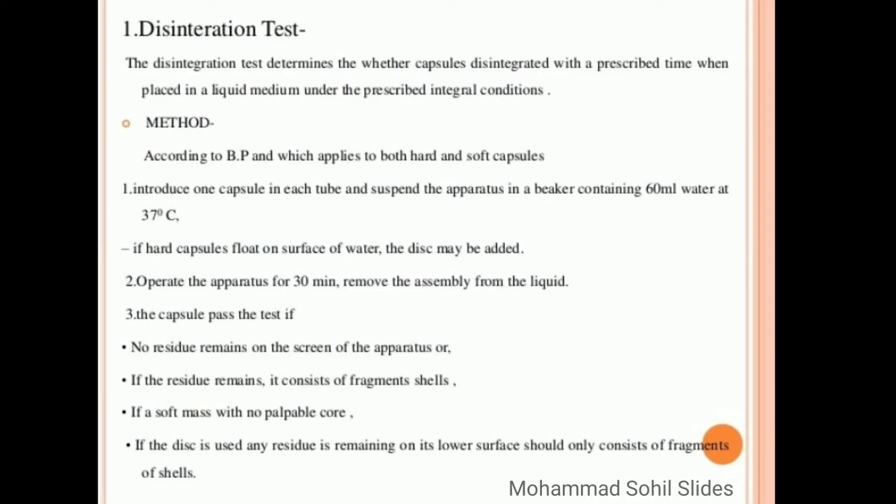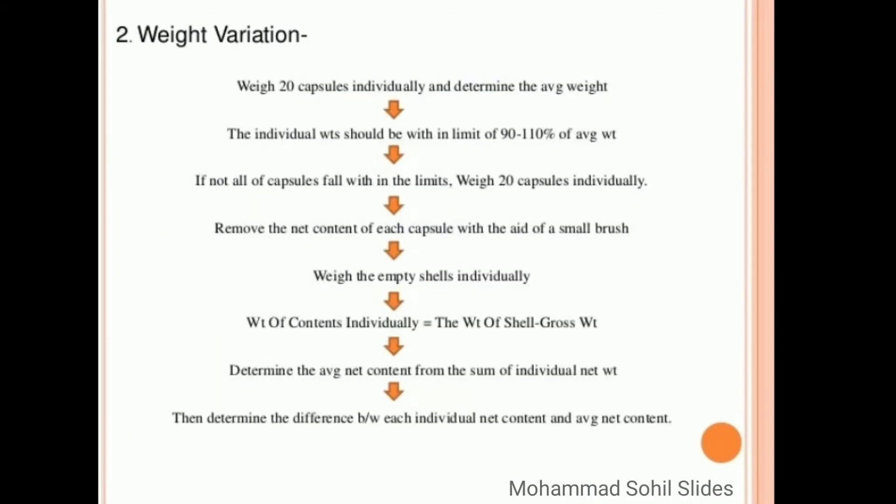Then second method is weight variation. Weigh 20 capsules individually and determine the average weight. The individual weight should be within limit of 90 to 110 percent of average weight.